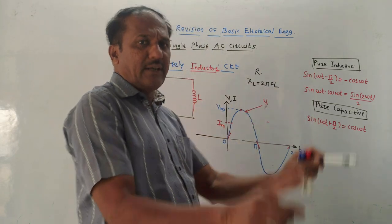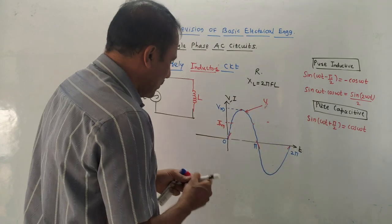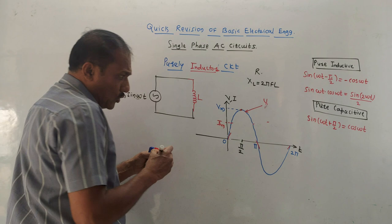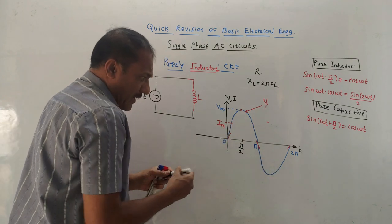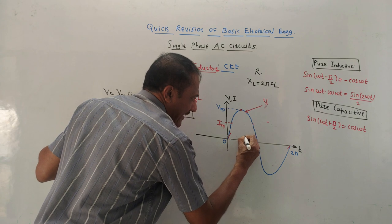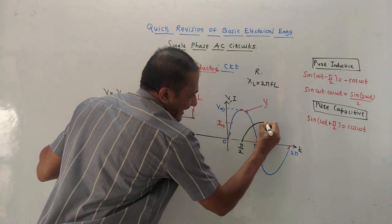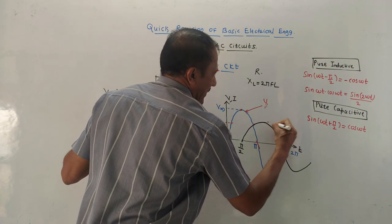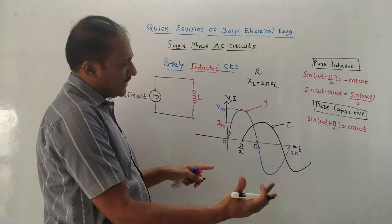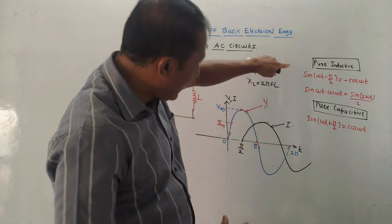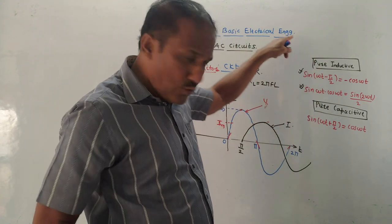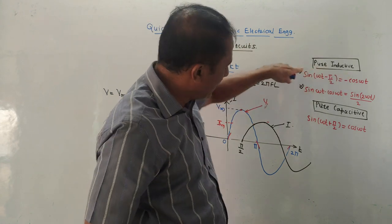In case of an inductor, current lags the voltage by an angle π/2. Since the current is lagging, it will start late — it will start from π/2, and its amplitude will be less than that of the voltage. The voltage waveform remains the same; current starts from π/2 because in an inductive circuit, current lags voltage by an angle π/2. These trigonometric identities are required to derive the expression of power for a purely inductive circuit.